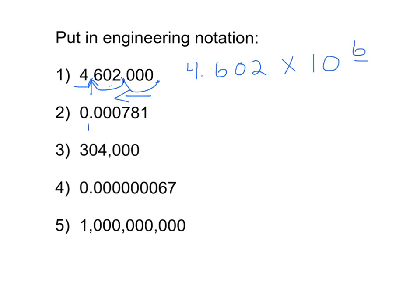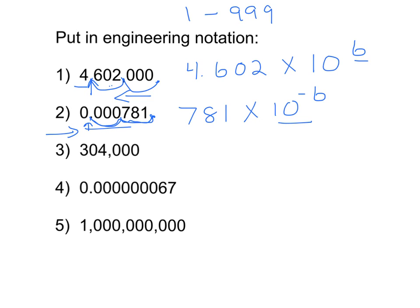For number two, I start with my decimal here and I'm going to move it in groups of three. One, two, three — I do not have a non-zero number in front of the decimal if I stop there. So I'm going to move it another three places: one, two, three. If I move my decimal here, I would have three non-zero digits in front of the decimal. I need a number between one and 999 inclusive, and 781 is between there. So I would have 781 times 10. I moved the decimal six places to the right, so it will be a negative exponent — I'm multiplying 781 by a small number in order to get a number less than one.